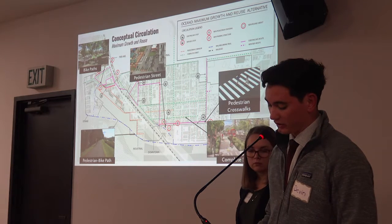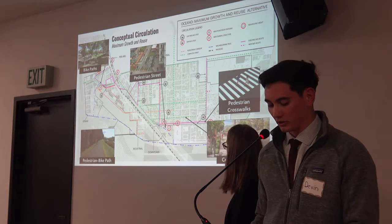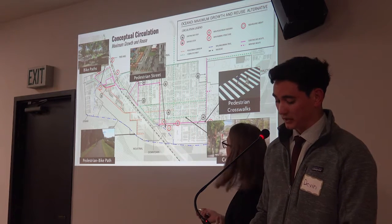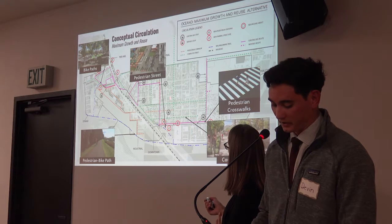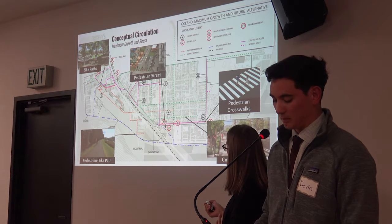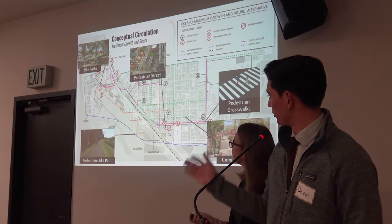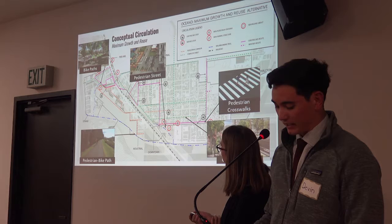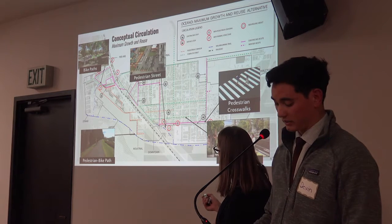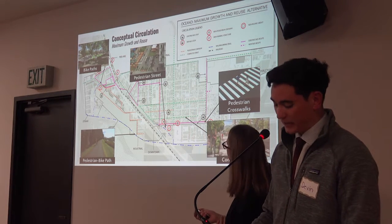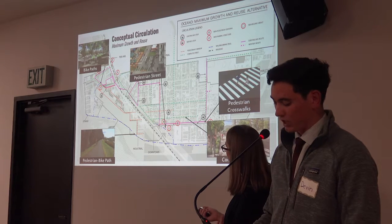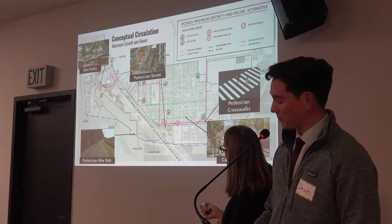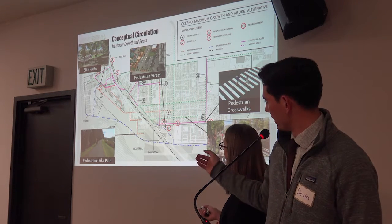The proposed circulation network for this alternative suggests improvements centered on active transportation within Oceano. This includes complete streets that accommodate expanded transit availability and enhanced pedestrian and bicycle access across the community, shown in the green dashed lines. This alternative integrates a variety of pedestrian pathways to improve safety and connectivity, including multiple pedestrian crosswalks and a pedestrian and bike dedicated path highlighted in dashed blue lines.